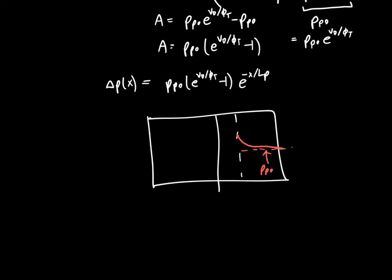Take a deep breath — we're almost through all the hairy math. It turns out that if you solve the continuity equation in the P region for the electron carriers, you get the same type of result: the carrier concentration drops off from a peak value near the edge of the depletion region to its equilibrium value. The solution looks almost exactly the same, just with appropriate sign adjustments. This picture is the most valuable one to remember intuitively.